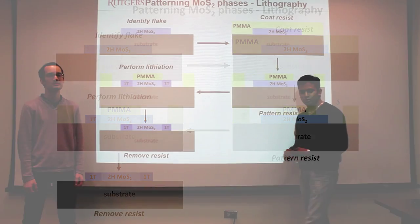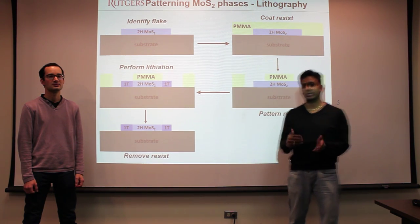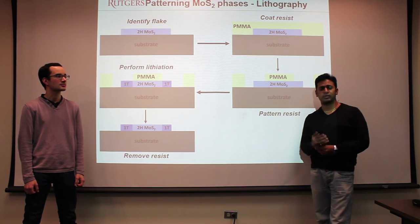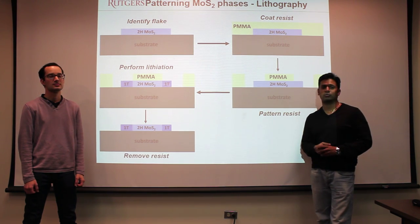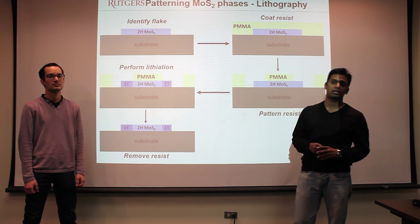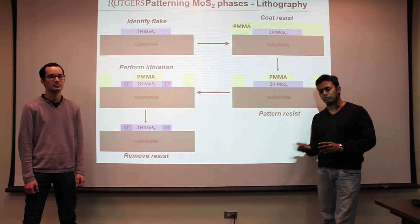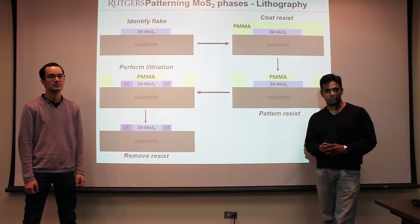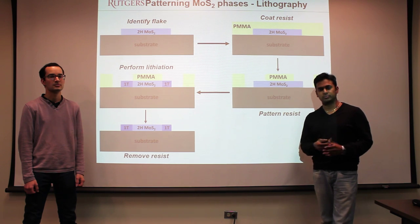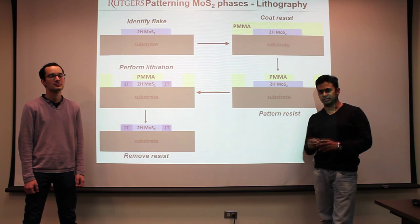Now we'll show the experimental demonstration of converting from the 2H phase to the 1T phase. First, we go to the optical microscope and find the flake we want to work on. Then we go to the glove box and put the sample in butyllithium for the conversion, followed by washing with hexane to remove the butyl content, then washing with water to remove the lithium.